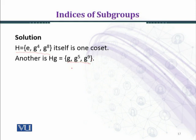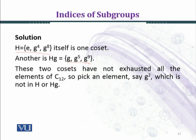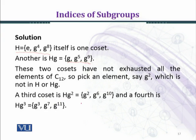If we take G squared, then we shall get HG² equal to G squared, G⁶, and G¹⁰ — we are multiplying H with G squared. Similarly, HG³ can be found, and all elements of the group C12 will be covered. So picking G squared which is not in H, the third coset is HG² = {G², G⁶, G¹⁰} and the fourth coset HG³ = {G³, G⁷, G¹¹}.